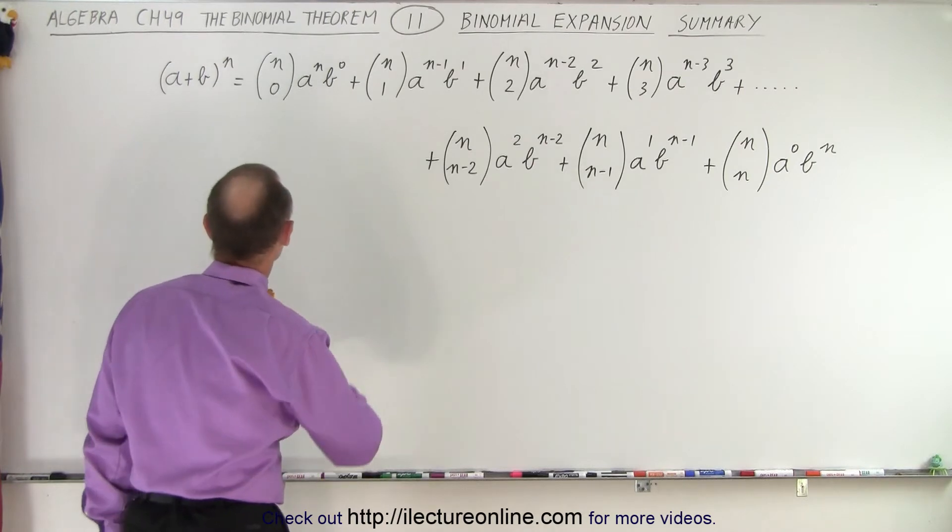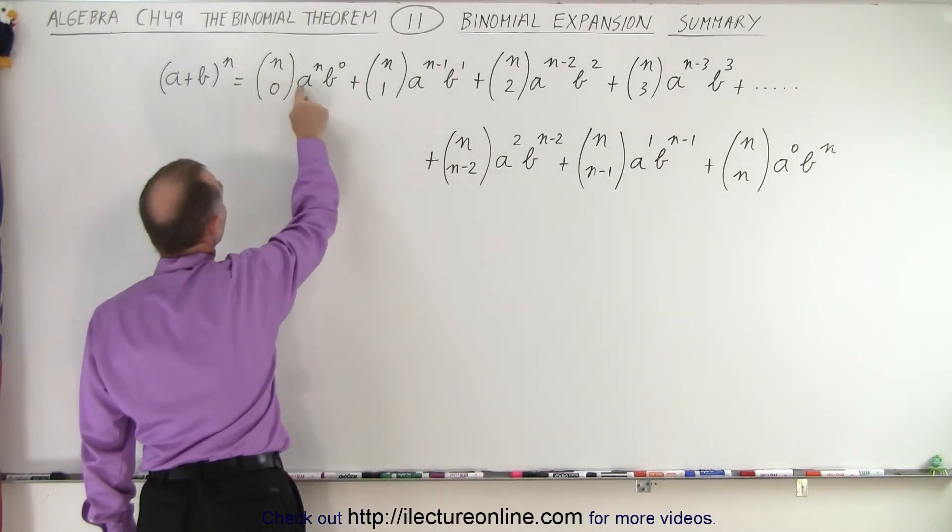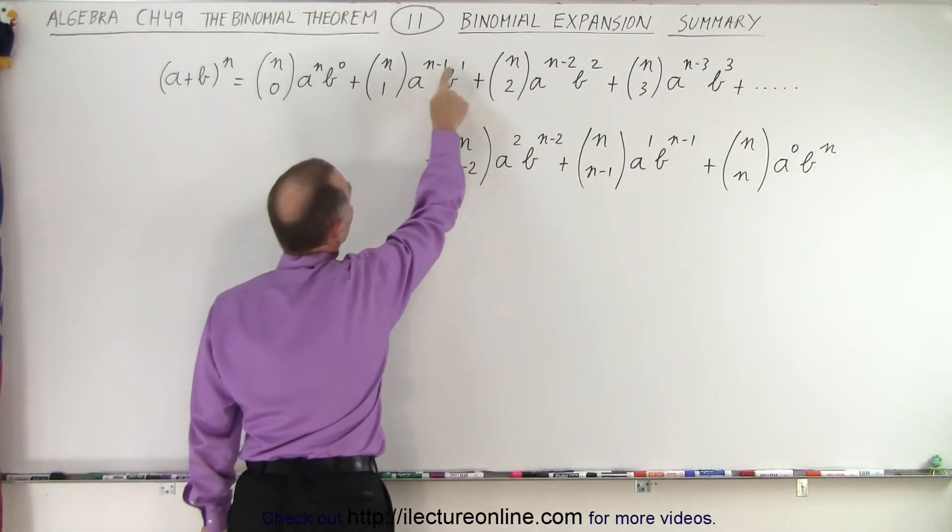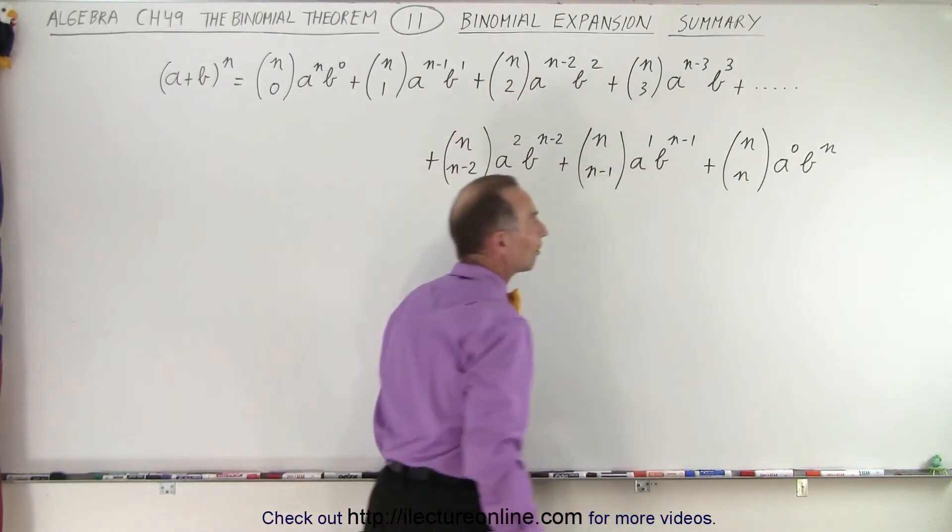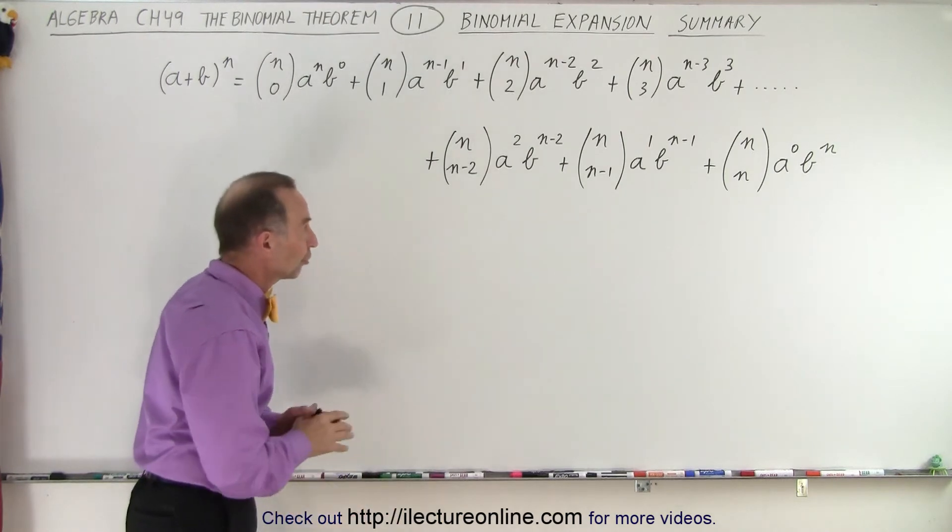Then the first term in the binomial starts with the top number n, and then it has n minus 1, n minus 2, n minus 3, all the way down to zero as being the final exponent of our first term.